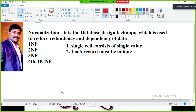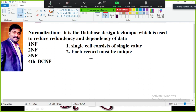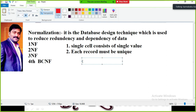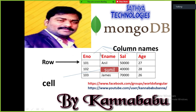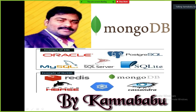MongoDB will not support schema or relations. Relational databases include Oracle, SQL Server, MySQL, SQLite, PostgreSQL. NoSQL databases include Redis, HBase, MongoDB, and Cassandra. Out of all NoSQL databases, MongoDB is very powerful — no SQL skills are needed when working with MongoDB.